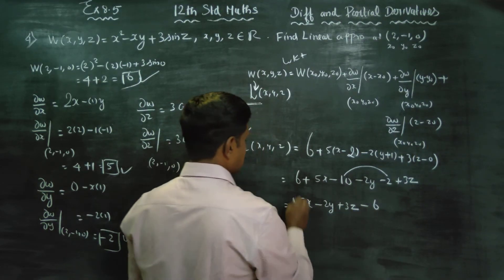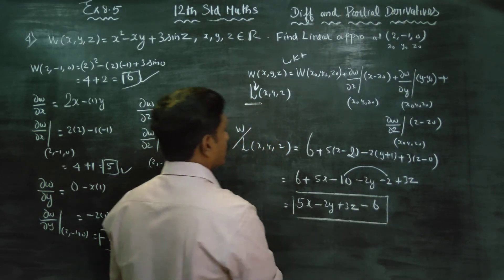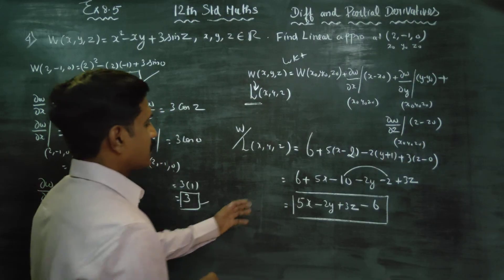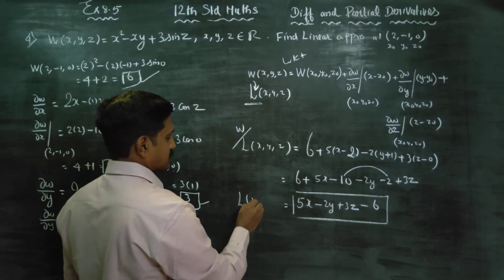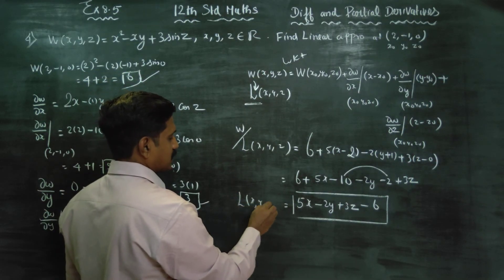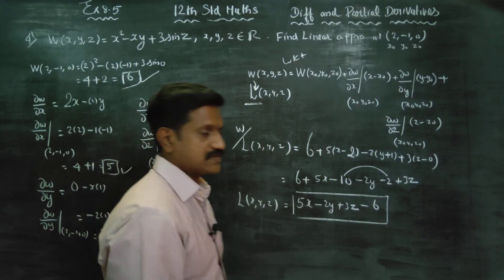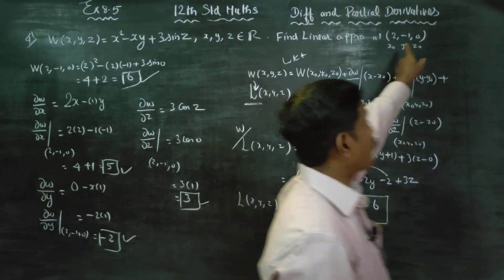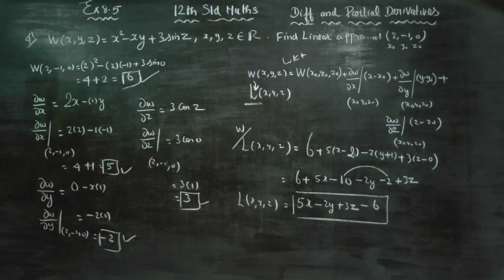So this is your linear approximation. It can be written as L(x, y, z) or W(x, y, z) at the point (2, minus 1, 0) — the linear approximation at that point.